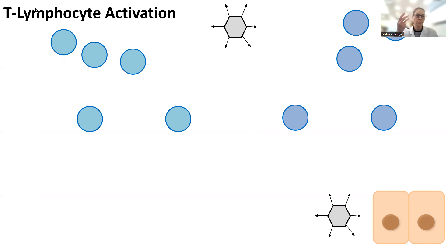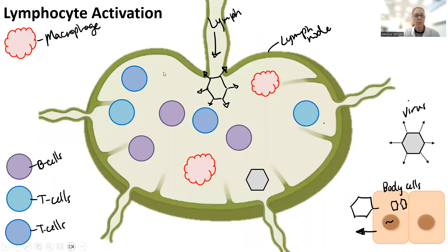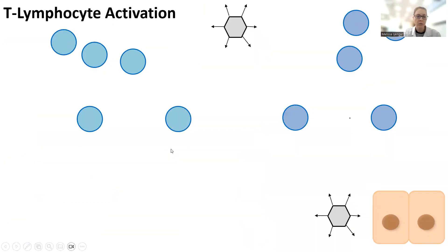Remember, we're in the lymph node. Our virus has entered the lymph node. In the lymph node, we have these two populations of T cells — one is a CD4 cell, and one is a CD8 cell.